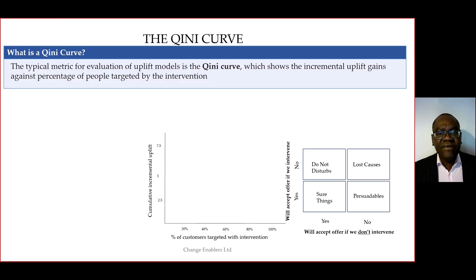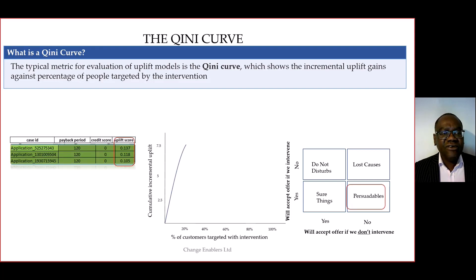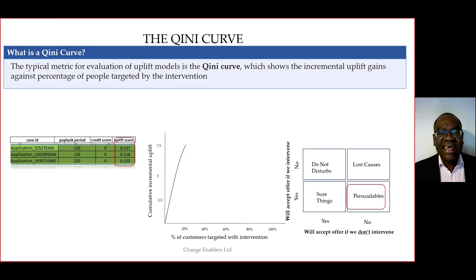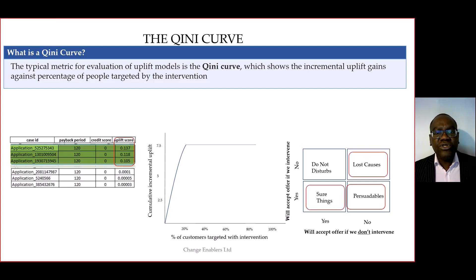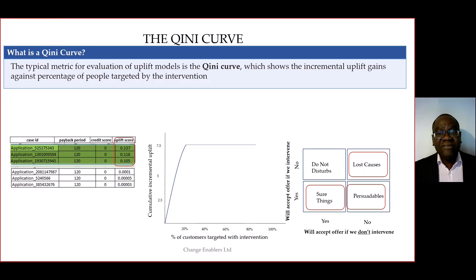As we plot these on the graph, we notice that the first set of customers who show up are those with a positive uplift score — the persuadables. They're the ones we are really interested in, as they respond positively to our intervention. However, as we increase the percentage of customers targeted, we run out of persuadables.